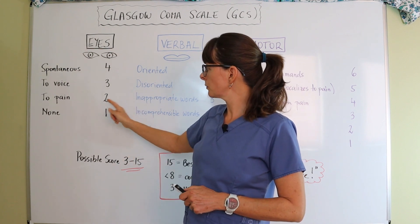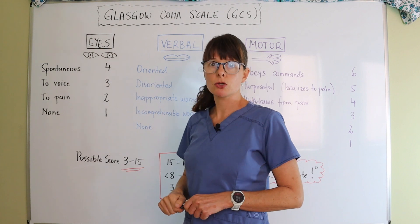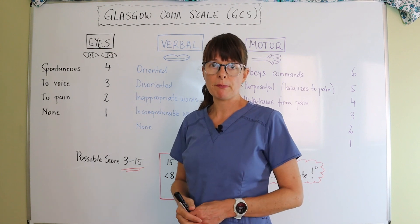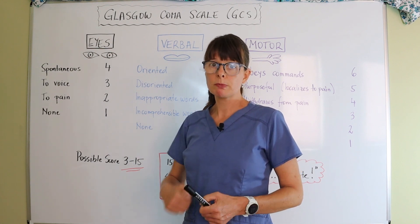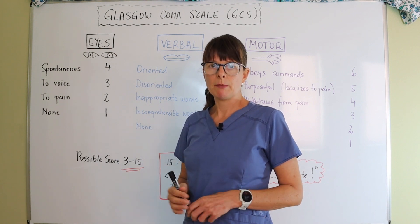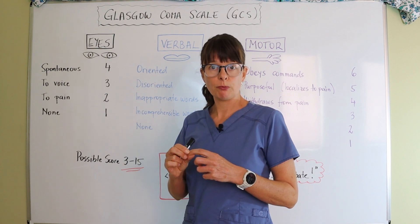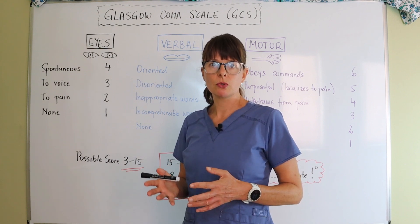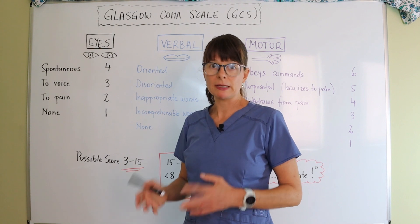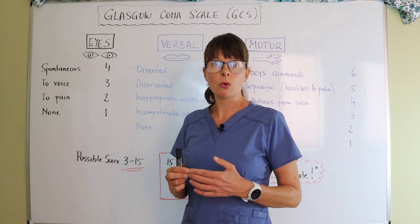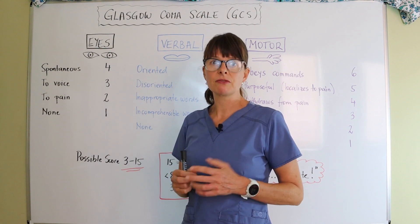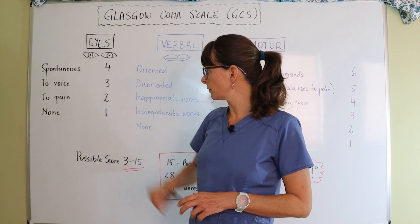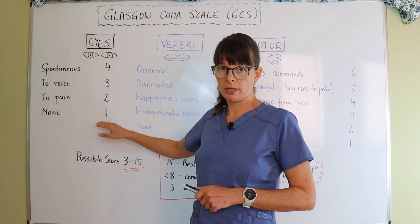A score of two is when the patient opens their eyes to pain. We want to be mindful when we elicit a painful response. This could be anything from a sternal rub, which can be quite invasive, or pinching their nail bed. You always want to start with the least amount of pain you can possibly inflict on the patient, and then increase slightly if there is no response. If they respond to pain by withdrawing or moaning, that's a score of two. If there's no eye-opening at all, it's a score of one.